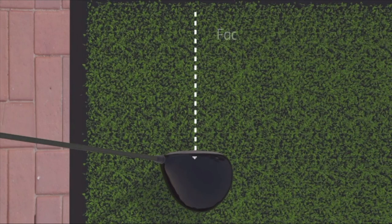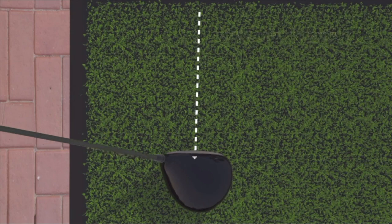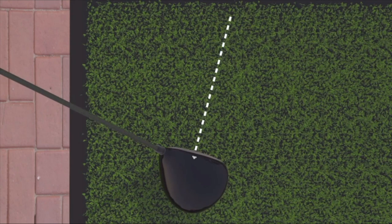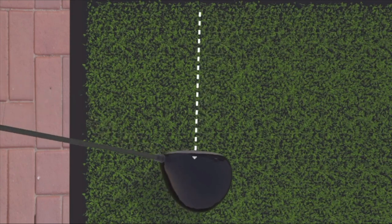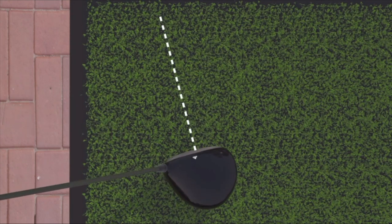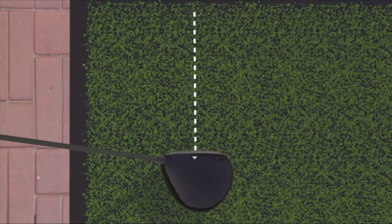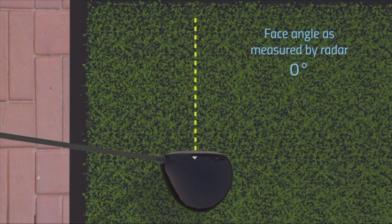The face angle calculated by radar follows the same process as dynamic loft. Whereas the optical system tells us exactly where the face plane is oriented, the radar is only capable of telling us the calculated face angle of the impact point. This is very important when dealing with curved face clubs such as the driver, fairway woods, and hybrids.